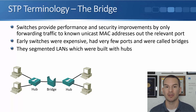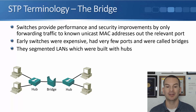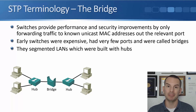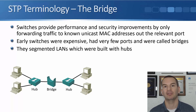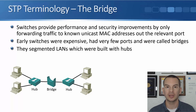Bridges segmented LANs which were built with hubs elsewhere. If you have a look at the diagram here, you can see that the main part of the network is built with hubs — that's where all the hosts are plugged in. But in between the two parts of the network built with hubs, you can put a bridge in there. The bridge is a layer two device and it learns the MAC addresses on both sides.